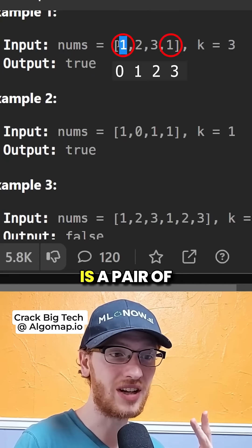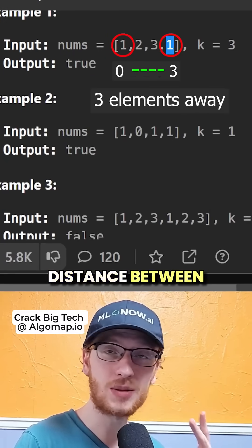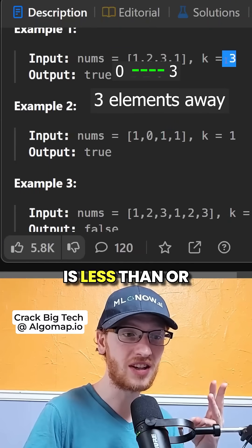So we would return true because there is a pair of duplicates, and the distance between those is 3, which is less than or equal to 3.